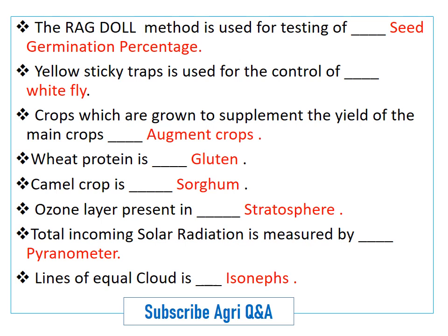Wheat protein is gluten. Camel crop is sorghum. The ozone layer is present in the stratosphere. Total incoming solar radiation is measured by a pyranometer. Lines of equal cloud cover are known as isonephs.